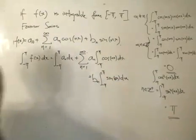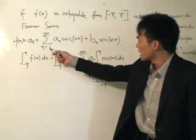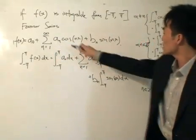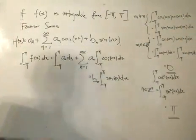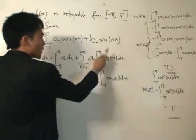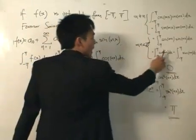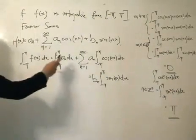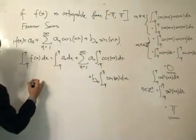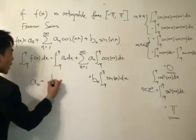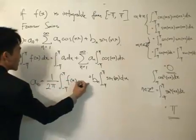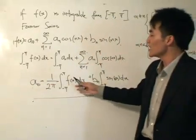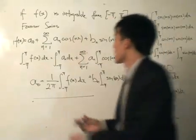Pay careful attention: aₙ depends on n, not on x, so when integrating with respect to x we can bring aₙ outside. Using our integration formulas, the integrals of cosine(nx) and sine(nx) from minus pi to pi both equal zero — those terms vanish. We're left with only the a₀ term, giving us: a₀ equals 1 divided by 2π times the integral from minus pi to pi of f(x)dx.